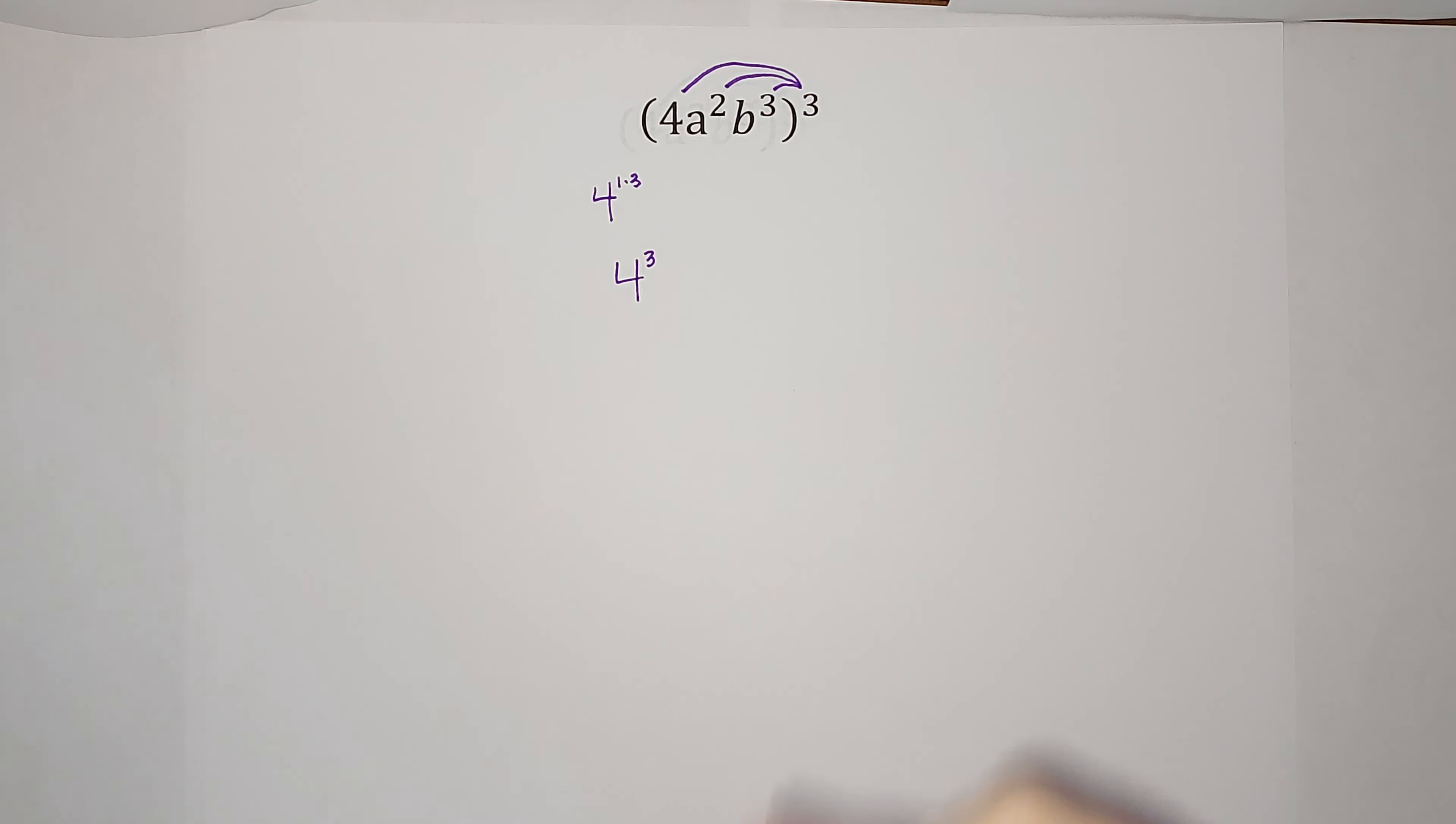Now my next term, I have a squared to the power of three. When it's to the power of three, I multiply the exponents. Two times three gives me six, so I have a to the sixth.